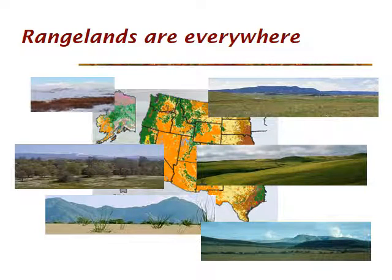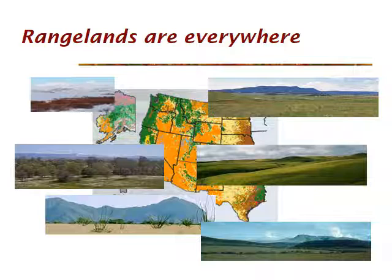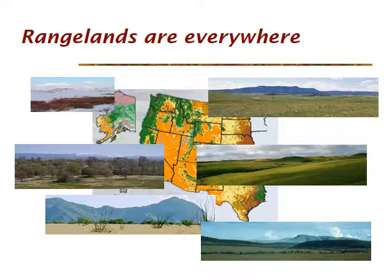Also in the U.S., there's diversity of rangelands. Of course, our beautiful Sagebrush Steppe here in Idaho, Nevada, Utah, and Wyoming, but also mountain grasslands, the large grasslands of the plains, the oak savannah of California, and the Chihuahuan and Sonoran Desert down in the southwest. All of those are rangelands, and they're managed by similar principles — we're going to focus on those main common principles.